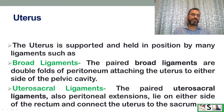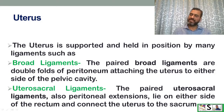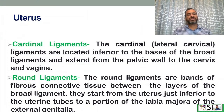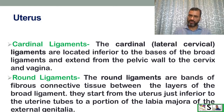The uterus is held in position by several ligaments. The broad ligament is a paired double fold of peritoneum attaching the uterus to either side of the pelvic cavity. The utero-sacral ligaments are peritoneal extensions lying on either side of the rectum, connecting the uterus to the sacrum. The cardinal ligaments are located inferior to the base of the broad ligament and extend from the pelvic wall to the cervix and vagina. The round ligaments are bands of fibrous connective tissue running between the layers of the broad ligament from the uterus to the labia majora.